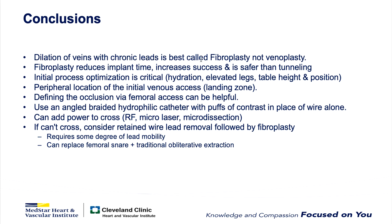In summary: dilatation of veins with chronic leads is best called fibroplasty, not venoplasty. Fibroplasty reduces implant time, increases success, and is safer than tunneling. Initial process optimization is critical. Peripheral location of initial venous access is important. Femoral access to define the occlusion can occasionally help. Use an angled hydrophilic catheter with puffs of contrast instead of a wire alone. You can add power to cross an occlusion using RF, a micro laser, or micro dissection. If you still can't cross, consider retained wire lead removal followed by fibroplasty, which requires some lead mobility and can replace femoral snaring and traditional obliterative extraction.